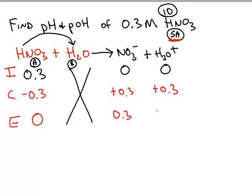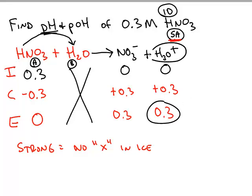So whenever you have a strong acid or a strong base, strong chemicals means you never have any X's in the ICE chart. There's nothing to solve for in this ICE chart. If we want the pH, we know what the concentration of hydronium is. pH is the negative log of hydronium, which is 0.3, and the negative log of 0.3 is 0.52.